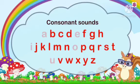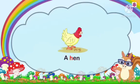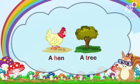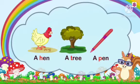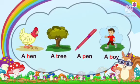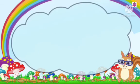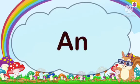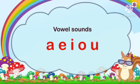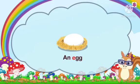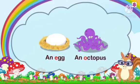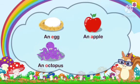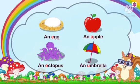To recap: we use 'a' if the word (noun) starts with consonants. For example: a hen, a tree, a pen, a boy. We use 'an' if the word starts with vowel sounds. For example: an egg, an octopus, an apple, an umbrella.